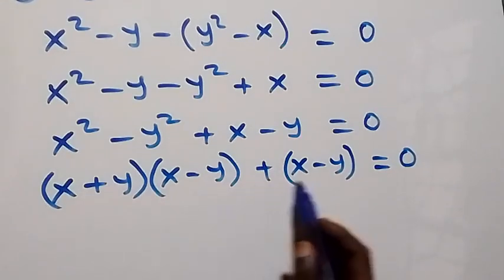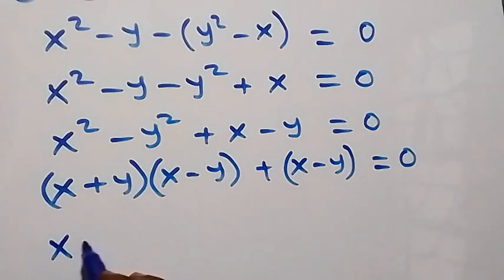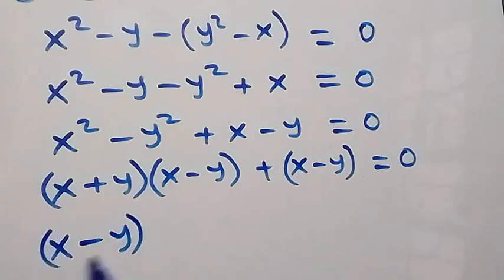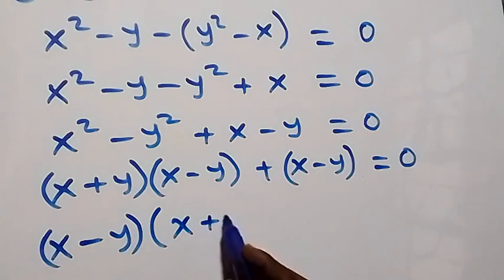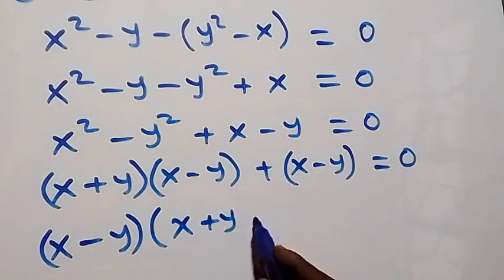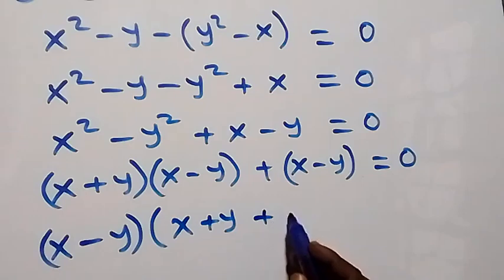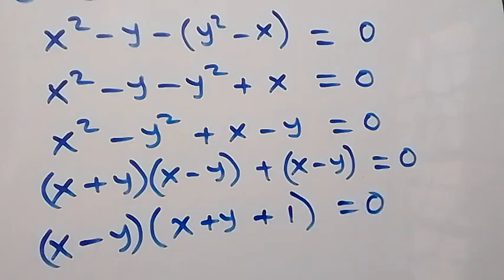Then here, x minus y is common. When we factor that out, we have x minus y, then into brackets, what is left is x plus y, then plus 1, which equals to 0.